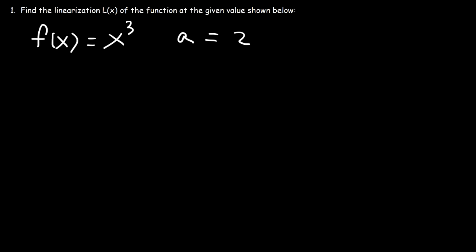So basically, what we really are trying to do is we're looking for the tangent line equation when x is 2. That's the basic idea of what we're doing. And you could use this formula: L(x) is equal to f(a) plus f'(a) times (x minus a).